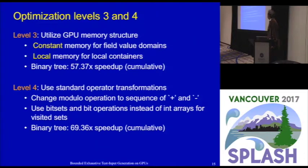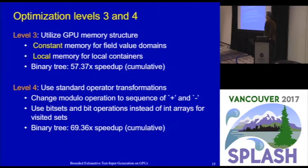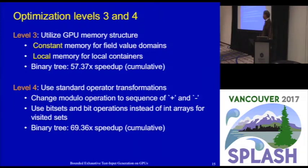In level four, we use standard operator transformations to change, for example, modulo operations that Korath does during backtracking, replacing them with sequences of additions and subtractions, which are more effective on GPUs. Similarly, we use bit sets and bit operations instead of integer arrays for tracking visited sets of nodes. This gives a slightly further speedup compared to level three.